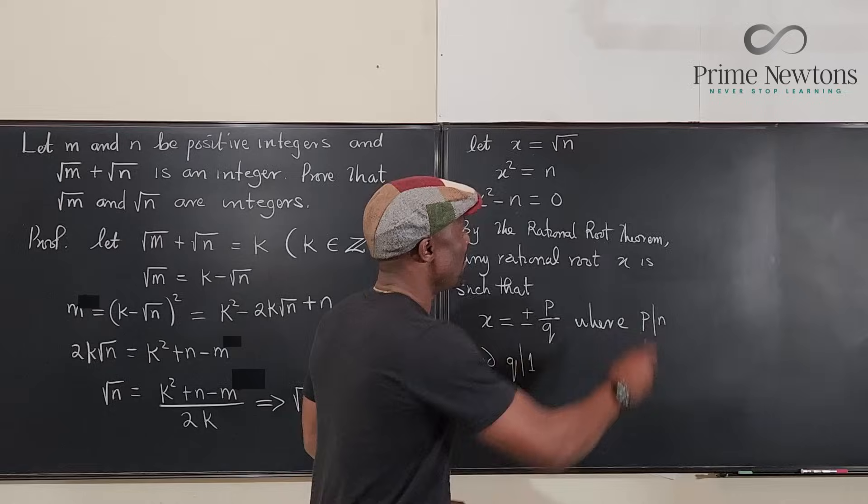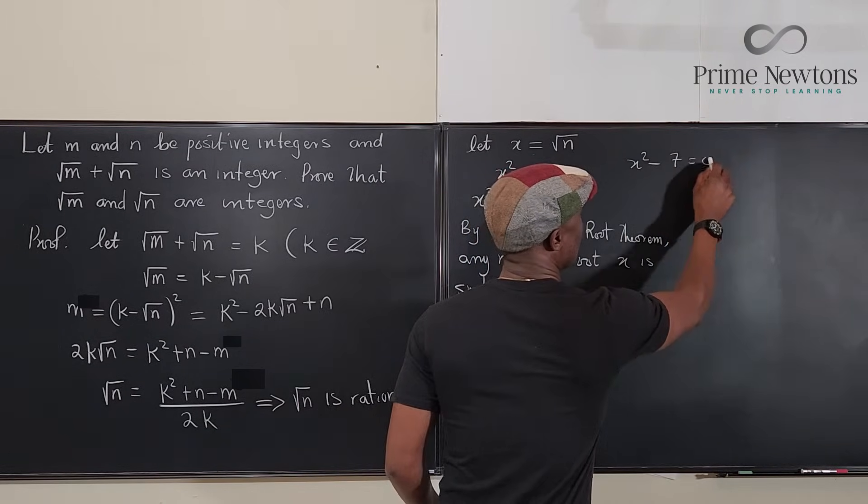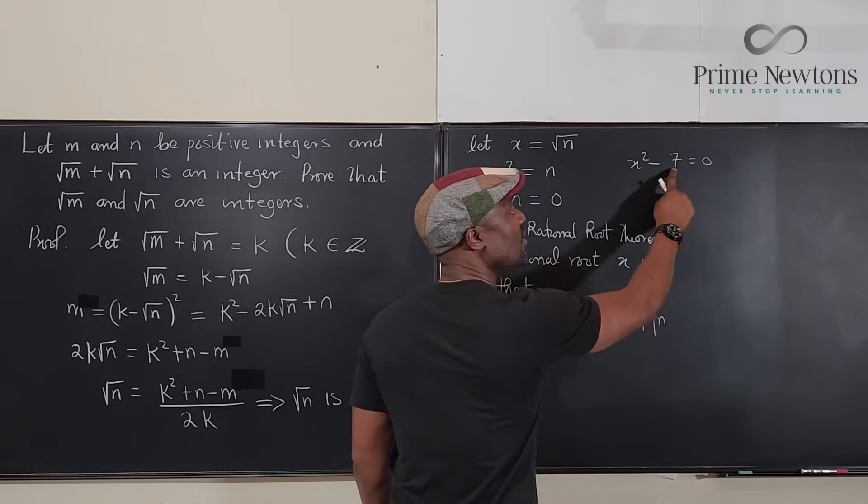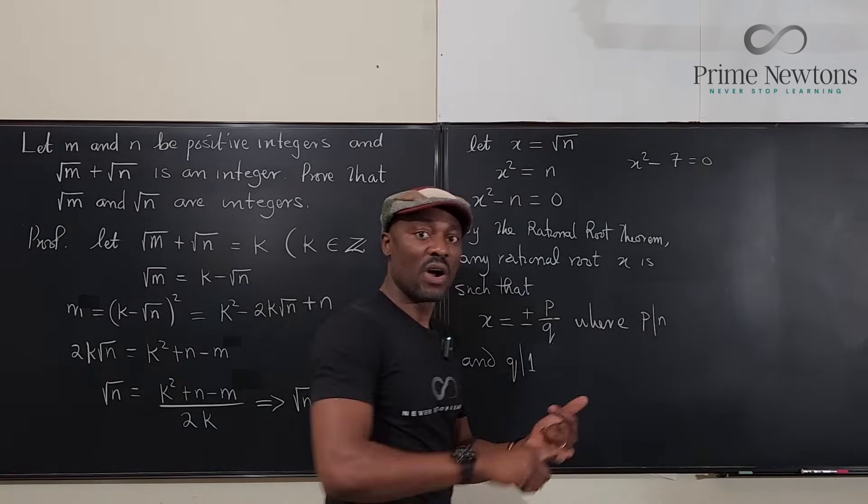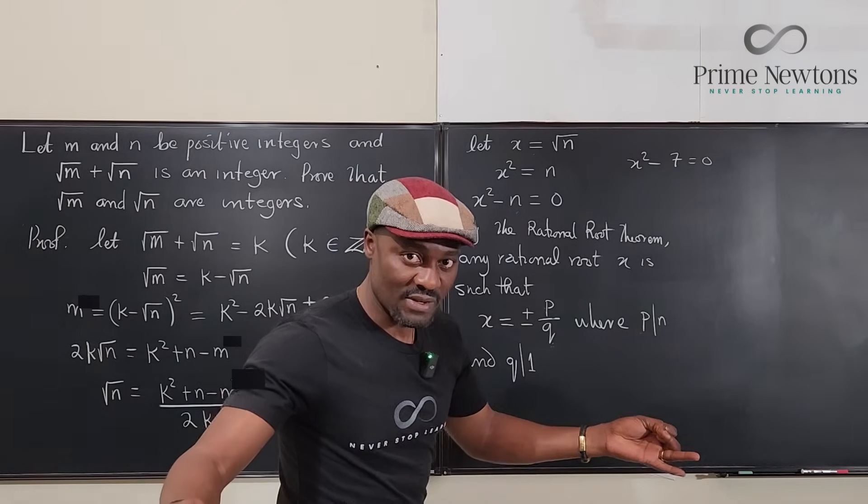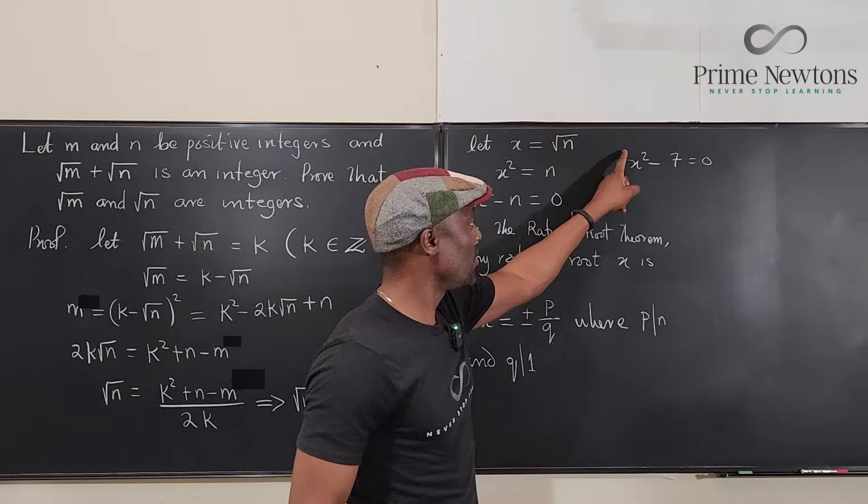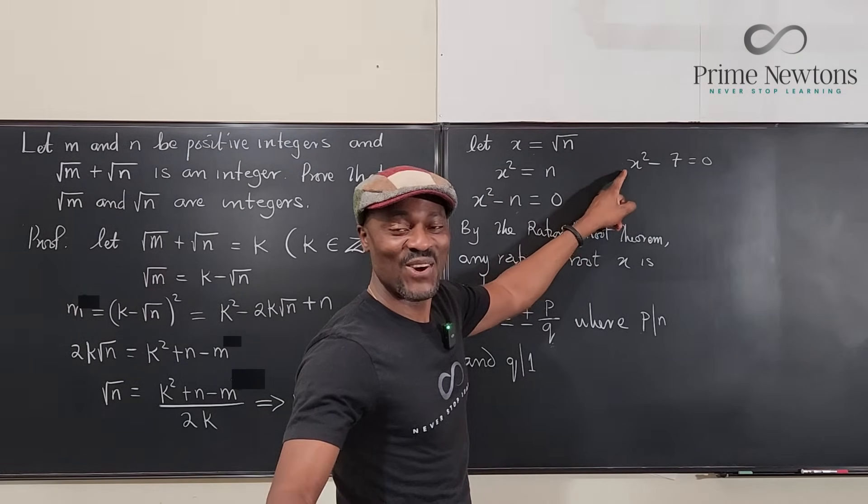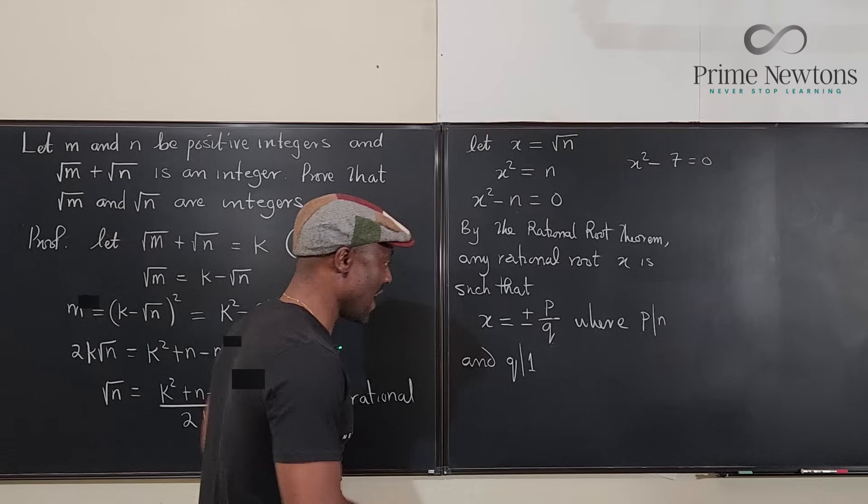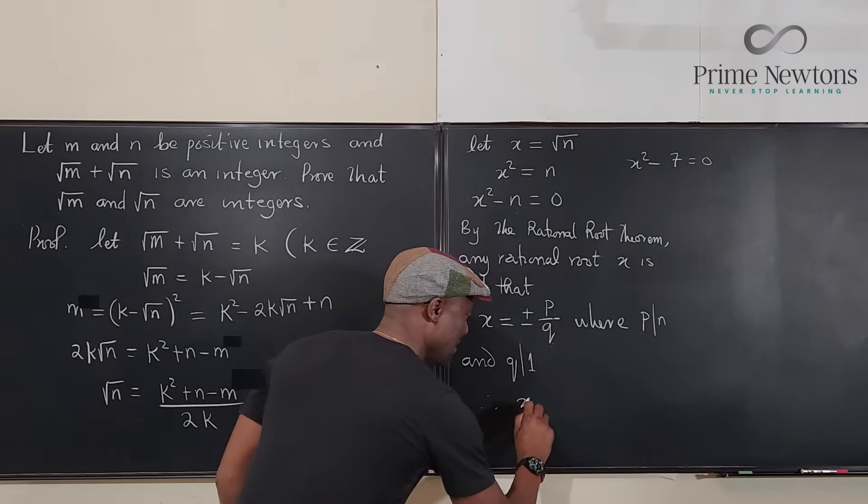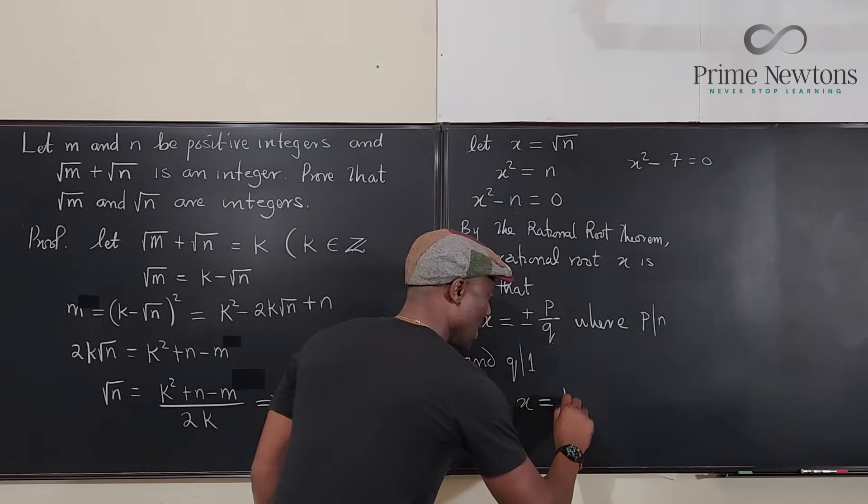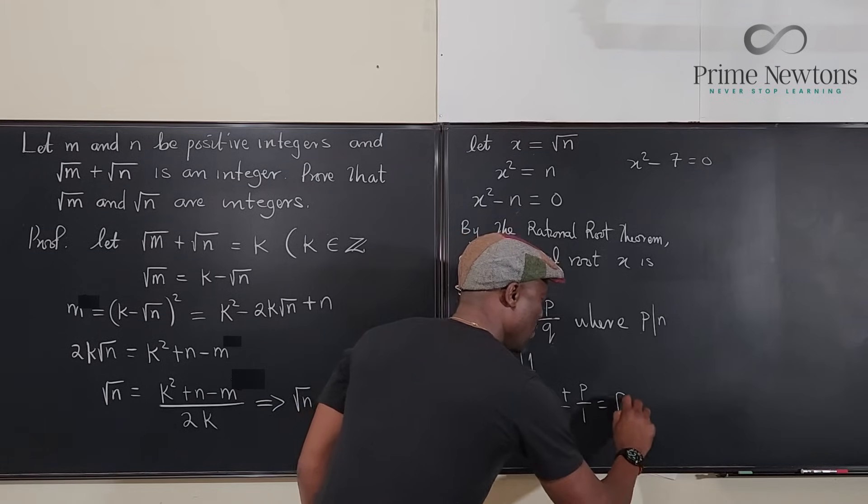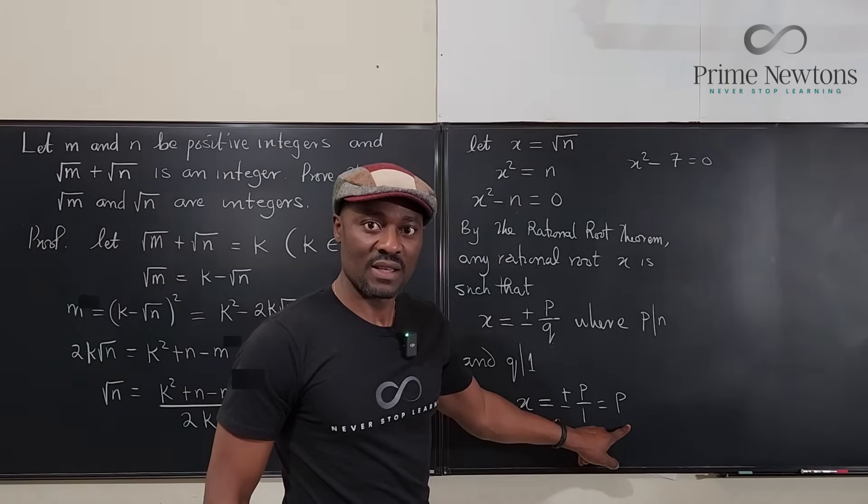So if we had x² - 7 = 0, then the only values you can have here are all integers that divide 7. There must be 1 and 7. And the only integers that divide 1 are just 1. So only 1 is the option here. Therefore x = ±p/1 = p, which is an integer.